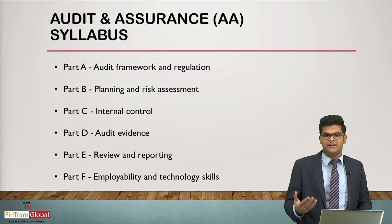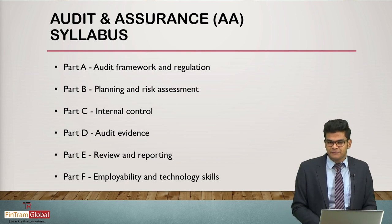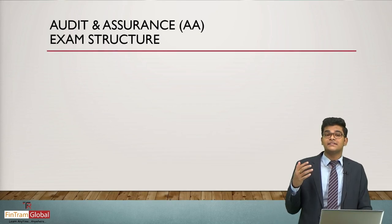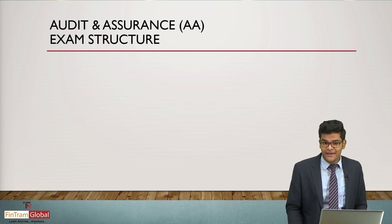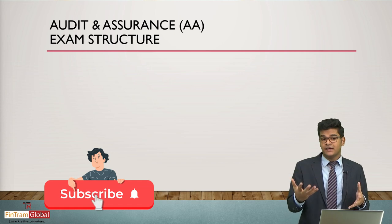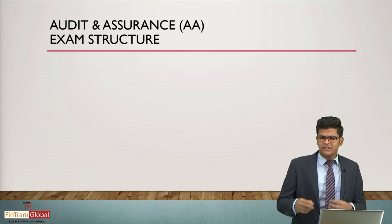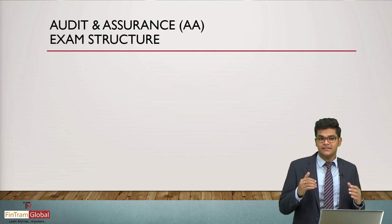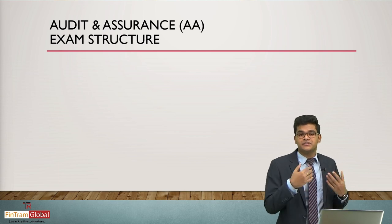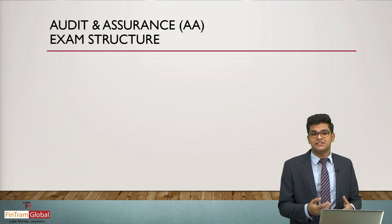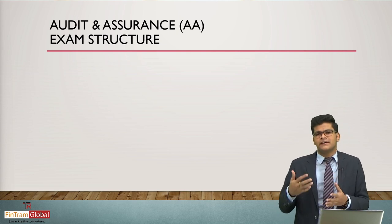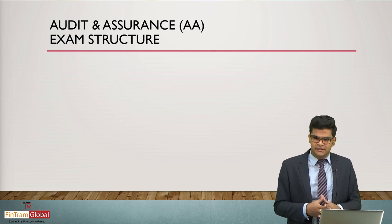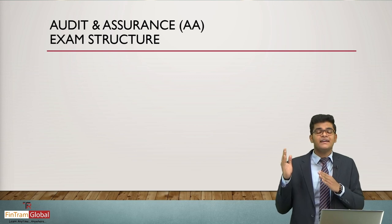Now, moving on to the exam structure. The Audit and Assurance exam is a bit different from other skill level papers such as Performance Management, Financial Management, Taxation, or Financial Reporting. Those papers have three sections — A, B, and C — with 15 MCQs in Section A, three OTQs in Section B, and two to three case study questions in Section C, all in a three-hour exam.